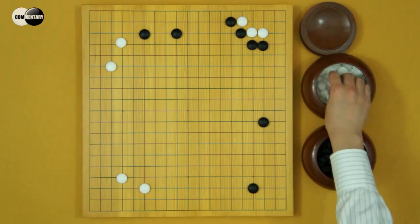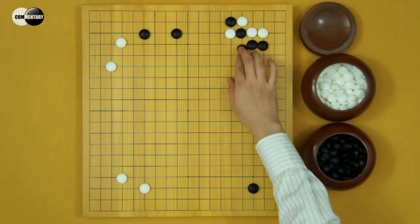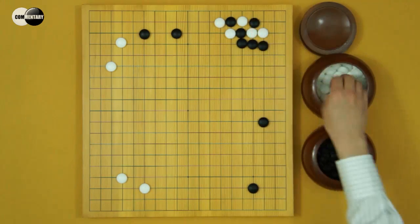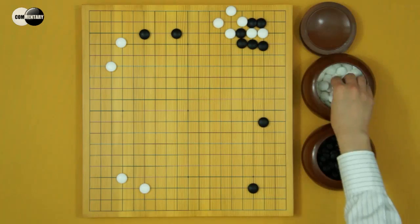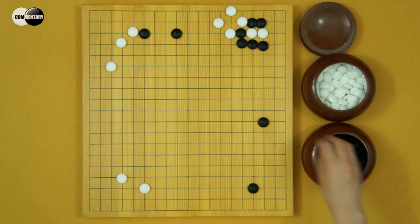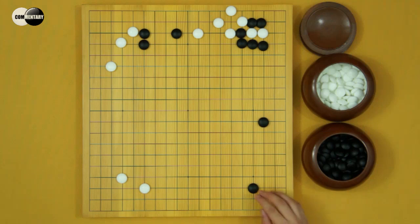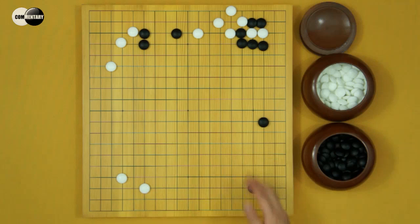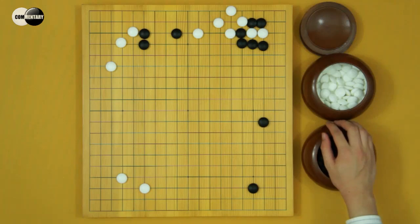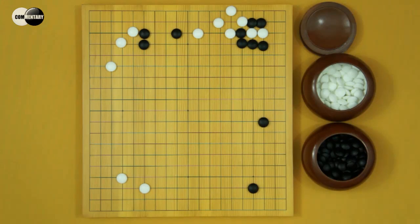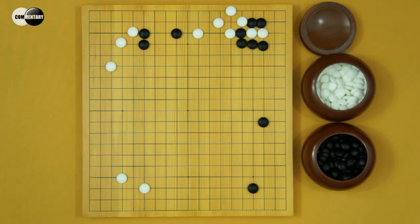If Black double hane, White will play like this. Black has two stones here. This result is good for White. That is because, White has two stones here, and Black has two stones here. The values between them are almost the same. Black corner is thicker than White's. But White's this group is also thicker than this Black group. So we can say, this result is exactly equal.